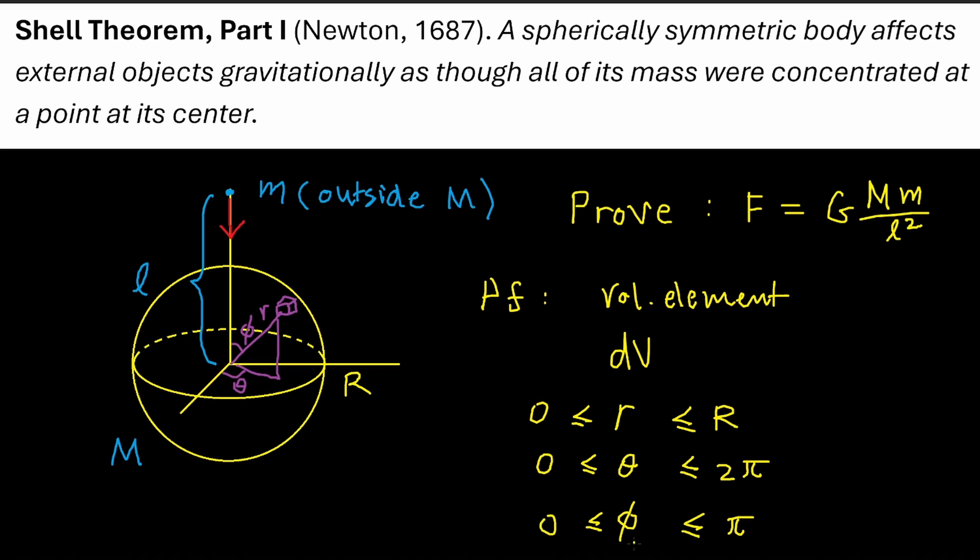And angle phi ranges from zero to π. The formula of the volume element in spherical coordinate is given by dV equals r² sin φ dφ dθ dr.